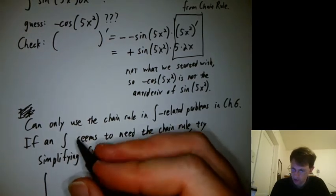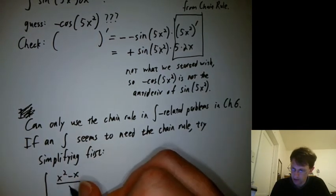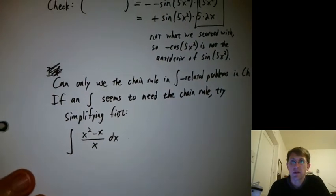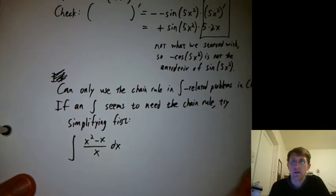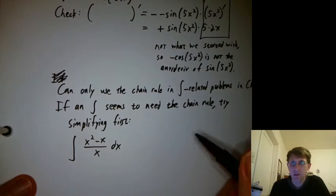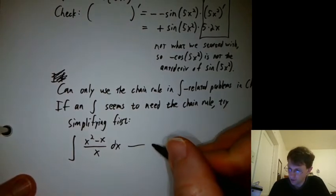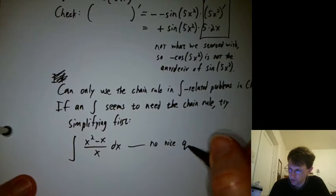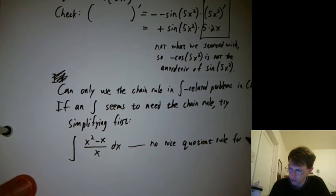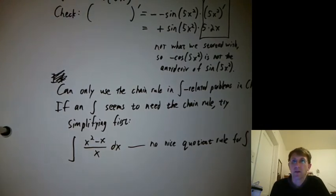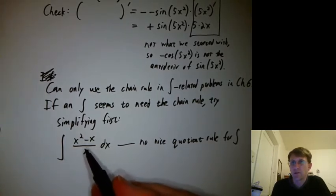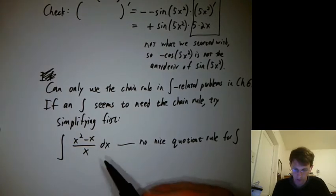So if you had something like integral of x squared minus x over x dx, would you want to use the quotient rule? Well, it turns out there's no nice quotient rule for integrals. There is a quotient rule for integrals, but basically nobody has it memorized. So we'll say there's no nice quotient rule for integrals. You might also see this as a chain rule problem if you brought the x up as a negative 1 power.